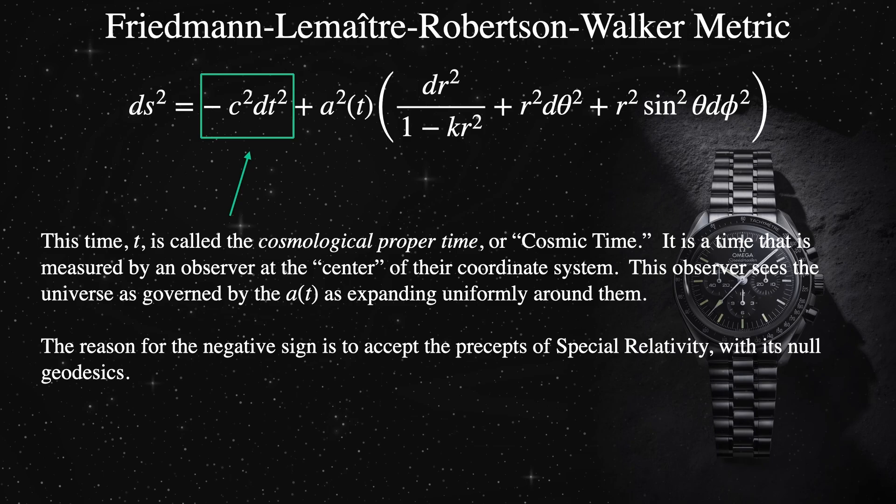If it were not isotropic, then we would measure time passing faster in one direction than another. This would mean that the oldest galaxies would be different in one direction than another. And that's not what we measure. We measure all directions as having the same age for a given radial distance. Therefore, we can be happy with our definition of cosmic time.